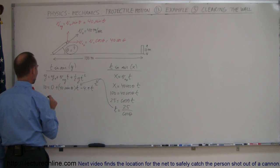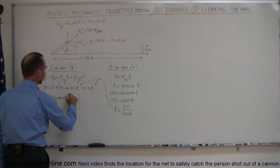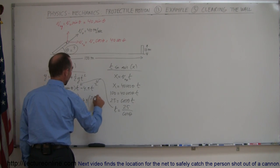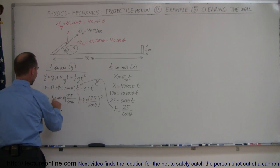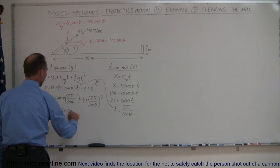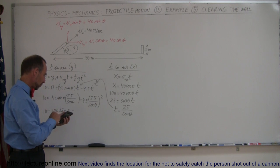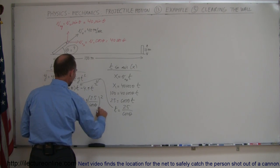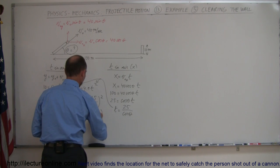Substituting t = 2.5/cos(θ) into the y equation: 10 = 40sin(θ) · (2.5/cos(θ)) − 4.9·(2.5/cos(θ))². Multiplying 40sin(θ) by 2.5/cos(θ) gives 100·tan(θ), since sin/cos = tan. Working out 4.9 × 2.5² gives 30.625, so we have 10 = 100tan(θ) − 30.625/cos²(θ). And 1/cos²(θ) is the secant squared, so this becomes 10 = 100tan(θ) − 30.625·sec²(θ).